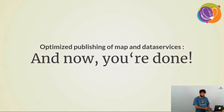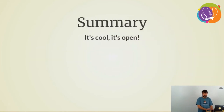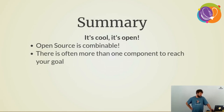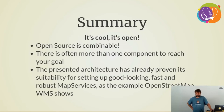In summary — you now have all the tools and ideas to produce optimized map and data services. Various open source components combine nicely: MapProxy, GeoServer, and GeoStyler can all run together in one environment. There are also alternative components — MapServer, deegree, or even proprietary software — but the presented architecture has already proven its suitability for setting up good-looking, fast map services.